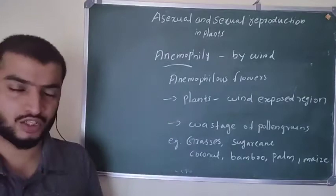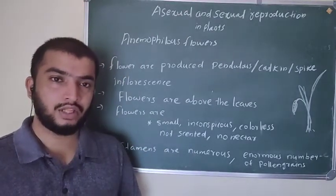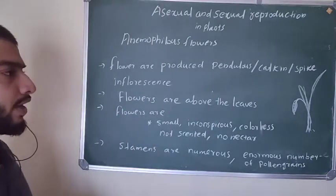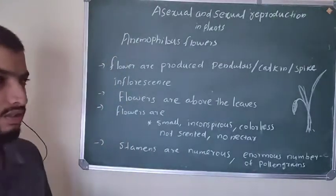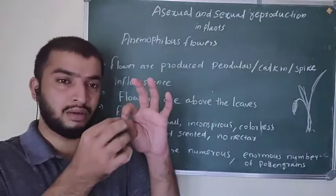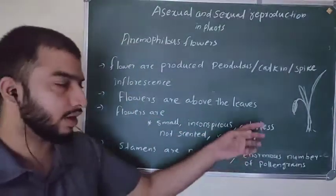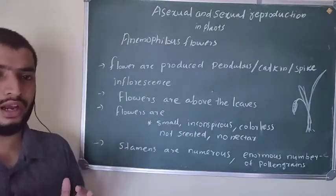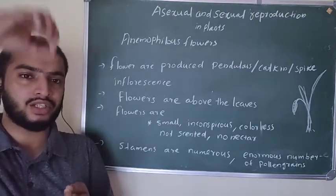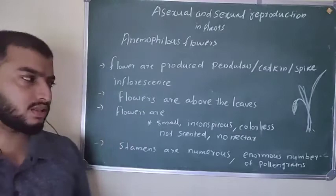What are the characteristic features of anemophilous flowers? These flowers are produced on pendulous or catkin-like or spike-like inflorescences. The inflorescence axis is very elongated, so the flowers stand above the leaves. Flowers are very small, inconspicuous, and colorless.